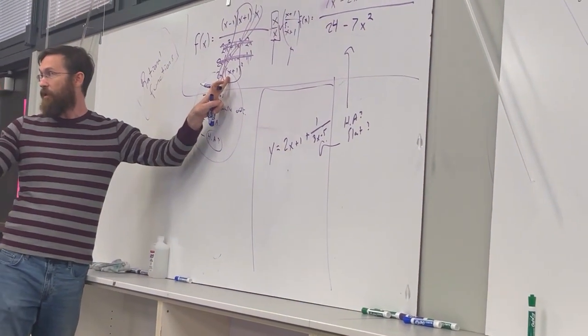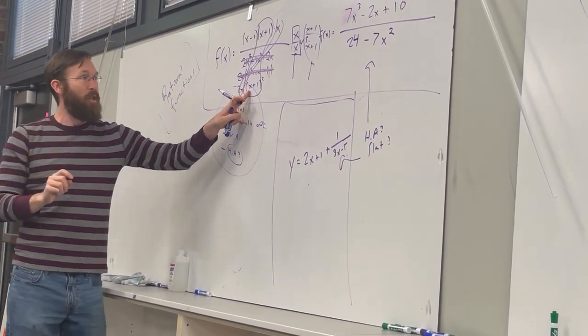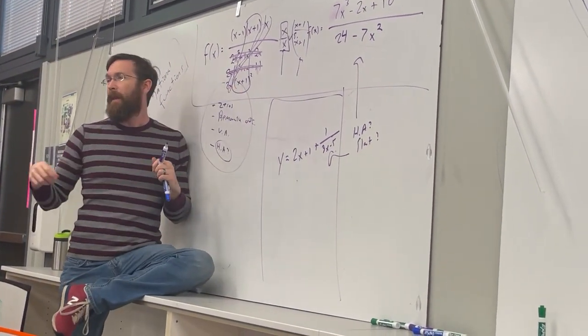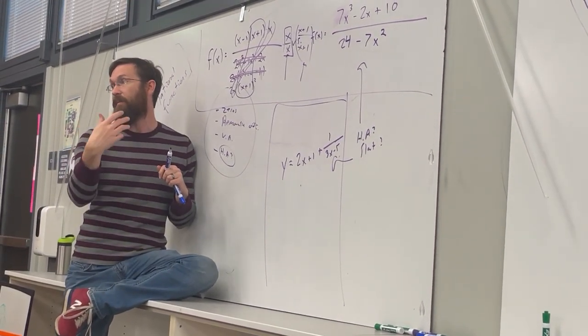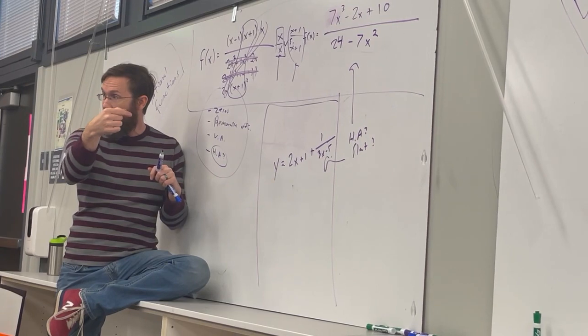What would happen if x values were approaching negative 1? So imagine plugging in like negative 0.9, negative 0.99, negative 0.999, negative 0.9999. So getting closer to that negative 1.